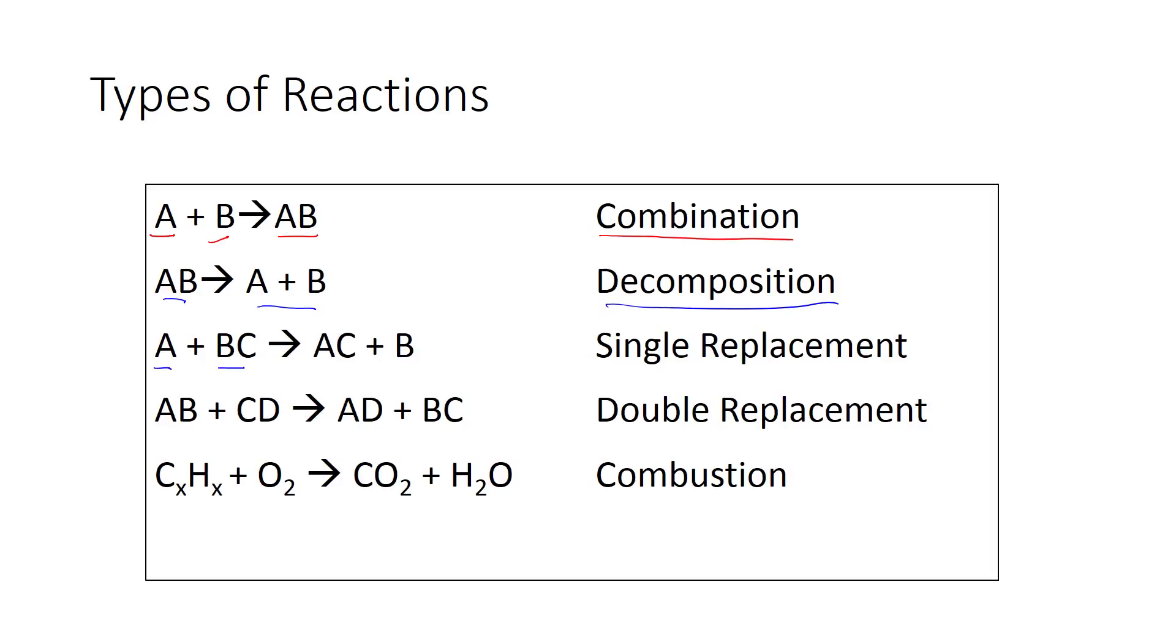A single element plus a compound where your metals swap places is a single replacement. For a single replacement, you're always going to have one guy by his lonesome, not in a compound. In a double replacement, you have two compounds, and those compounds' metals are going to swap places. So here, A and C are representing my metals. This is an example of a double replacement because both of your metals have swapped places and they are now with new nonmetals.